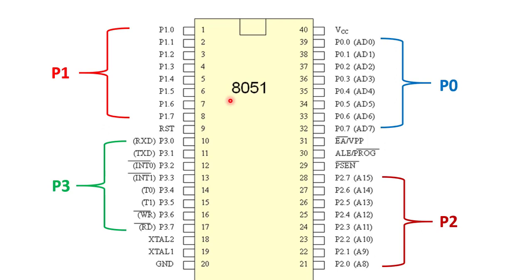Before I discuss the 8051 pin diagram, note that the 8051 microcontroller has four 8-bit bidirectional input/output ports: port 0, port 1, port 2, and port 3, each having 8 bits. Starting from the left-hand side, pin number 1 to pin number 8 are allotted for port 1, denoted P1.0 through P1.7.